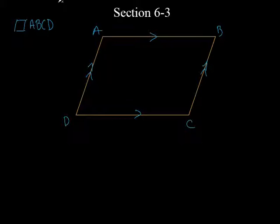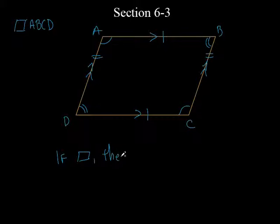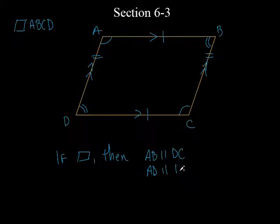Since we know it's a parallelogram, what else must be true? The opposite sides are equal. The opposite angles are equal. If it's a parallelogram, then AB must be parallel to DC, and AD must be parallel to BC. AB must be congruent to DC, and AD must be congruent to BC.